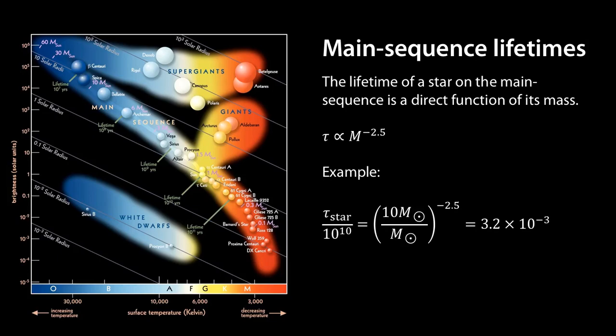Suppose we have a star with 10 times the mass of our sun, so t star over 10 to the 10, which is the lifetime of our sun in years, equals 10 solar masses over the mass of our sun, 1 solar mass, to the power of negative 2.5.